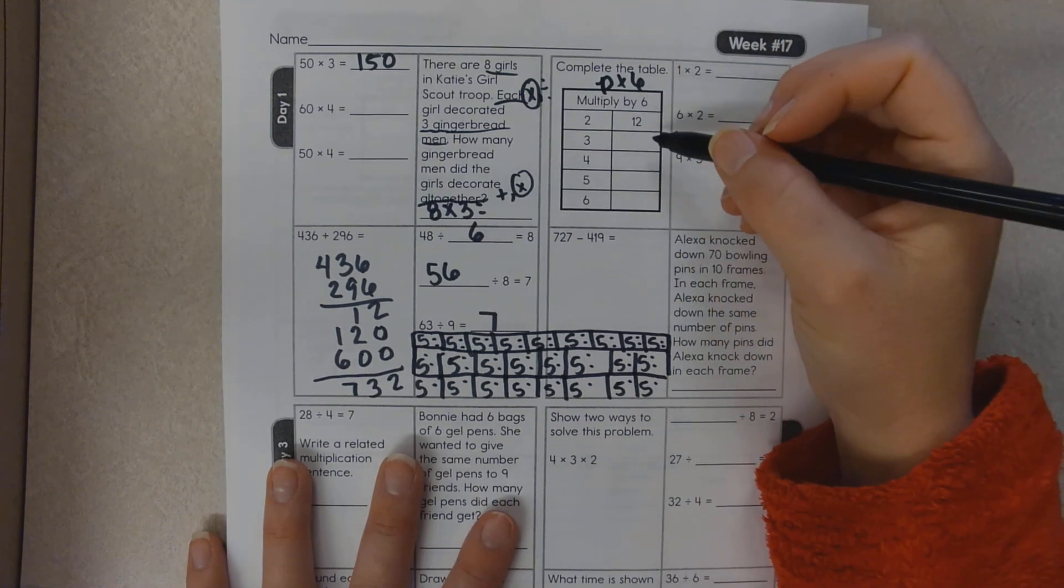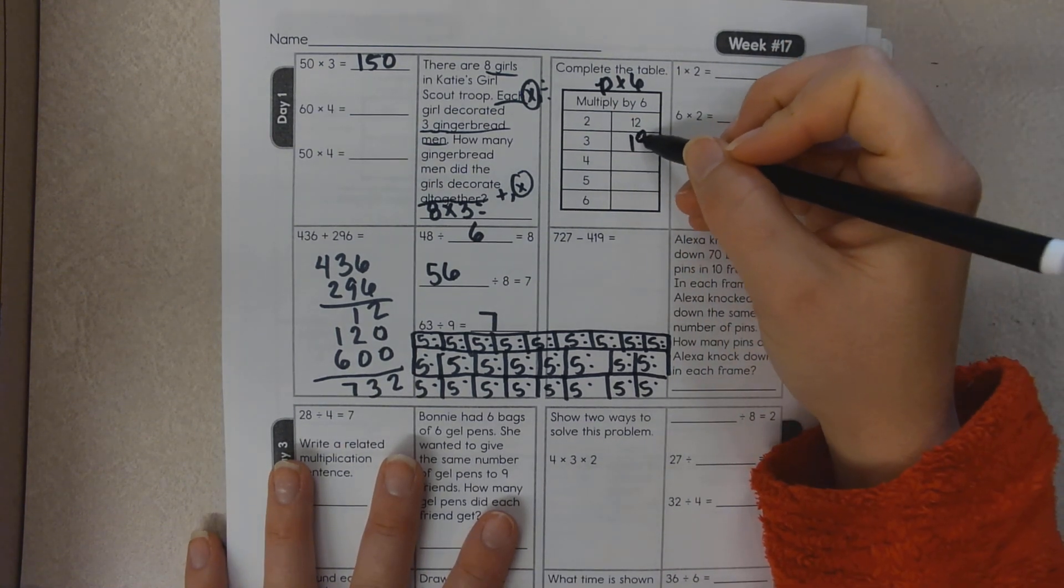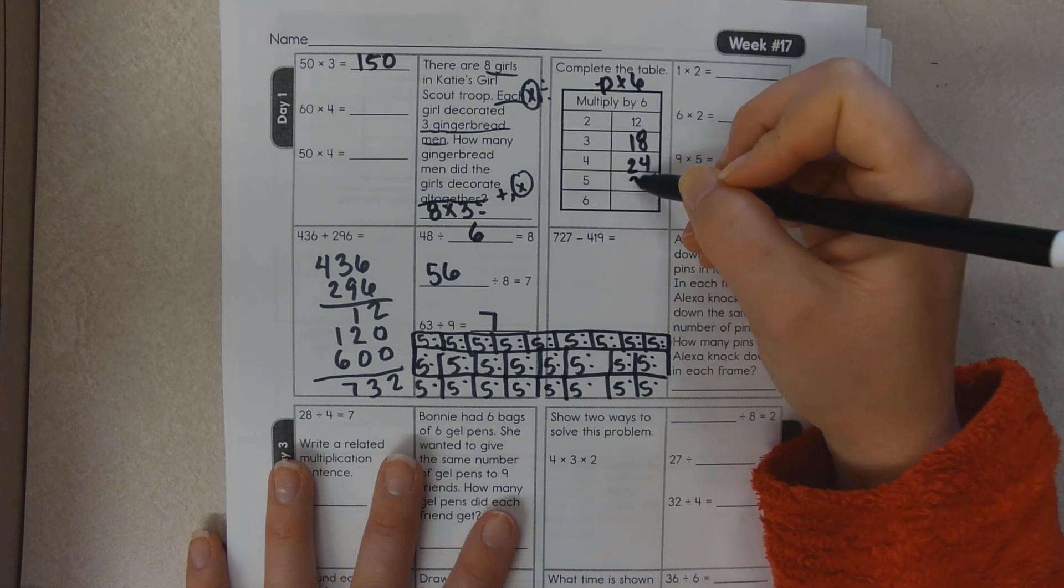So 3 times 6 is 18, 4 times 6 is 24, 5 times 6 is 30, 6 times 6 is 36.